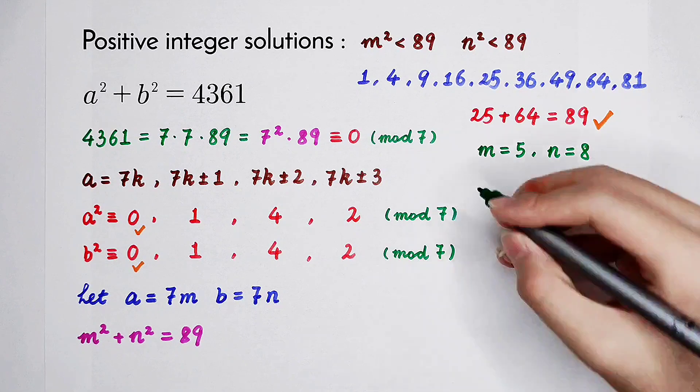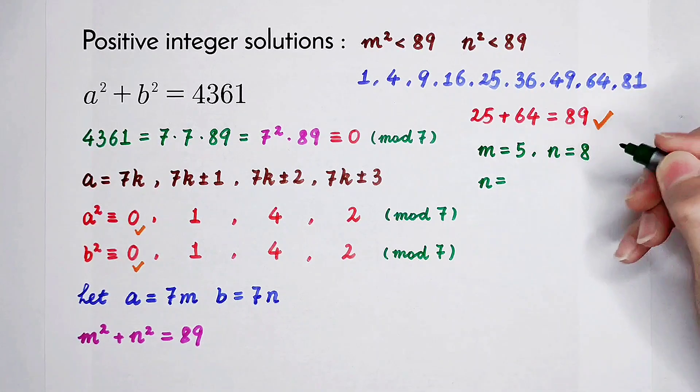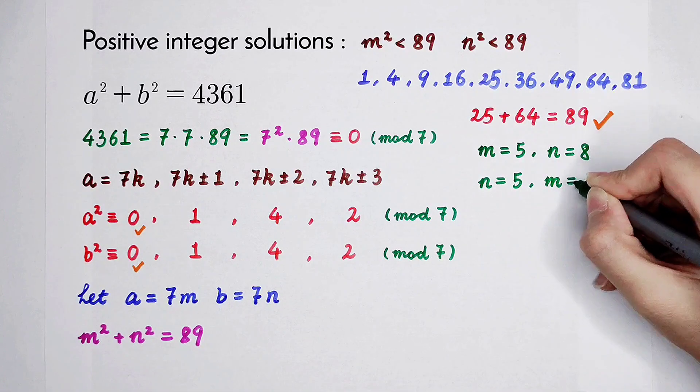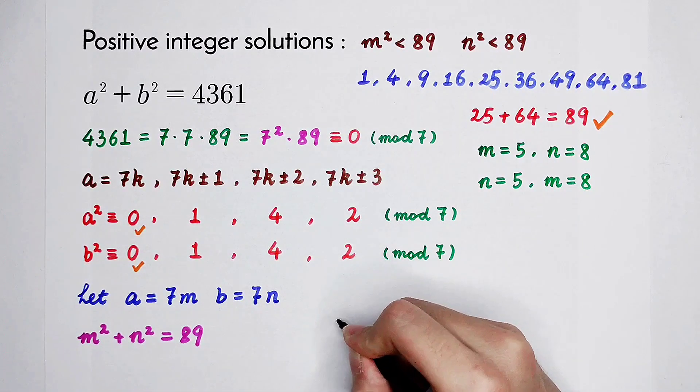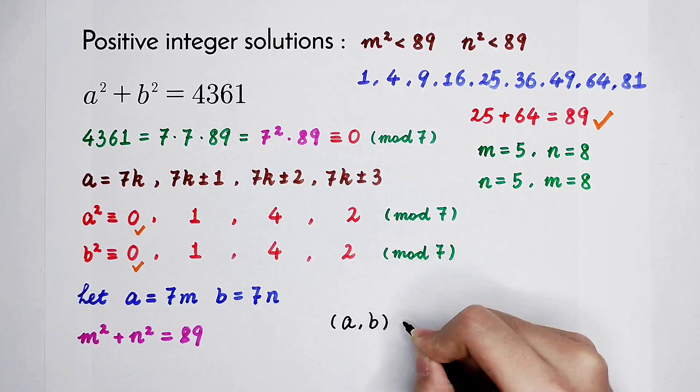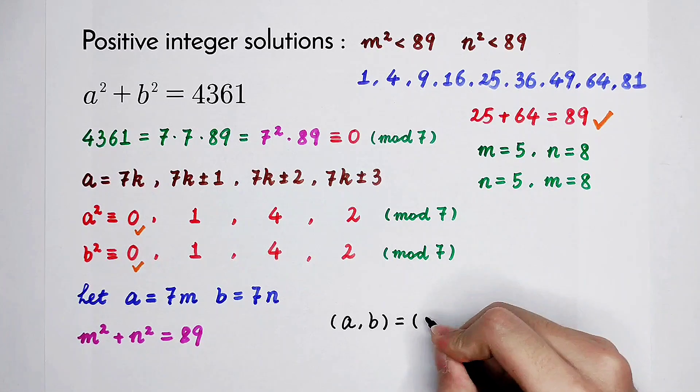The second case is m equals 8 and n equals 5. So a is 5 times 7, which is 35.